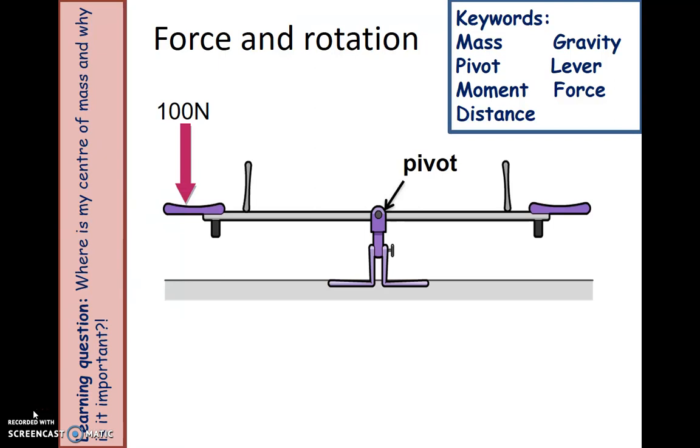So now we're going to look at, if we do have a force away from the center of mass, what will that force do? Well in this case we have 100 newtons and it's 2 meters away from this pivot.